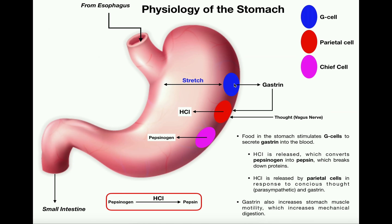The first cell type is the G cell. The G comes from the fact that this cell secretes a hormone into the blood called gastrin. When a bolus of food comes into the stomach, it causes the stomach to stretch as it fills. Whenever the walls of the stomach stretch, that stimulates G cells to release gastrin into the blood. Among other things, gastrin stimulates parietal cells to start making more hydrochloric acid.